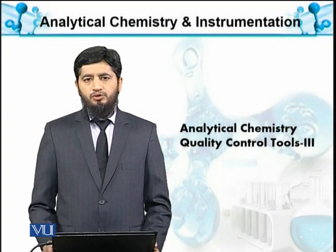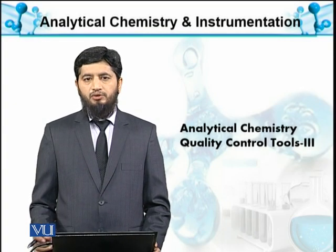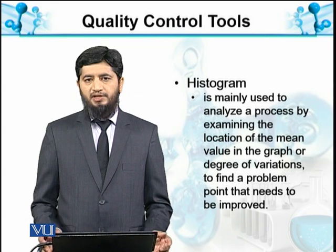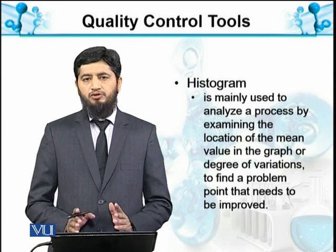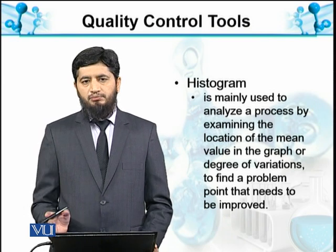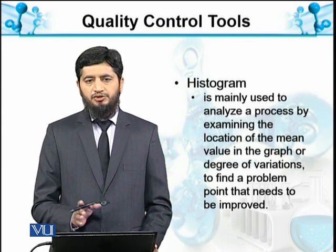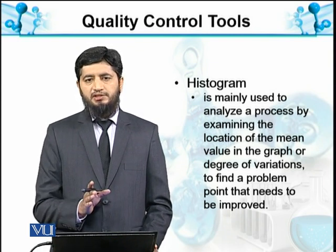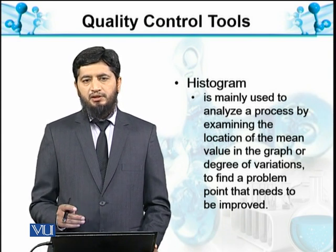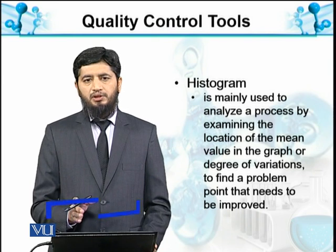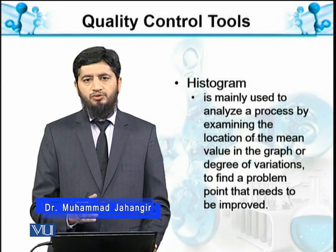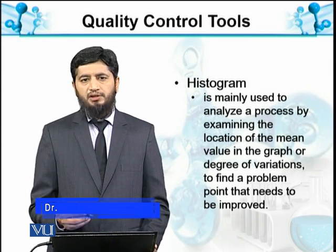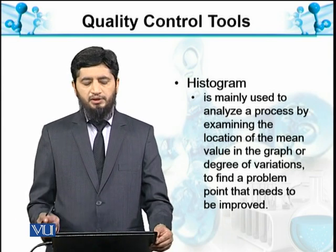The third quality control tool we are going to discuss is histogram. Histogram is mainly used to analyze a process by examining the location of the mean value. It can be related to time, showing the strength or frequency of occurrences. If you find out the root cause analysis in the histogram, we can see the effectiveness or the number of occurrences that one activity is performed.